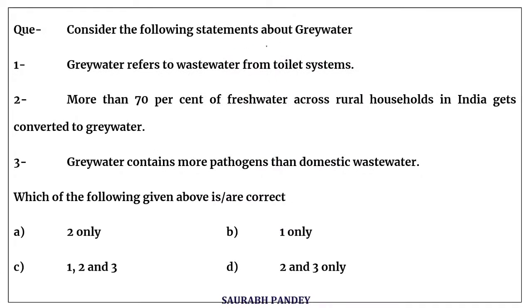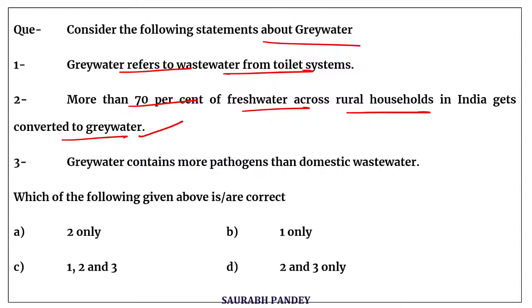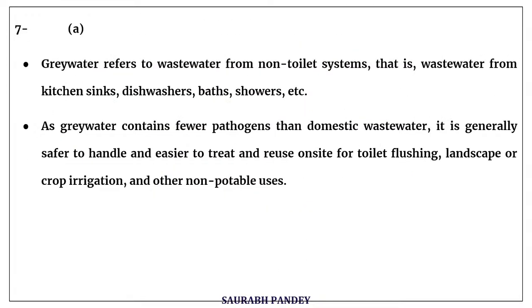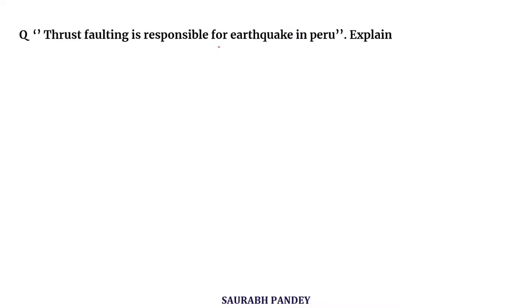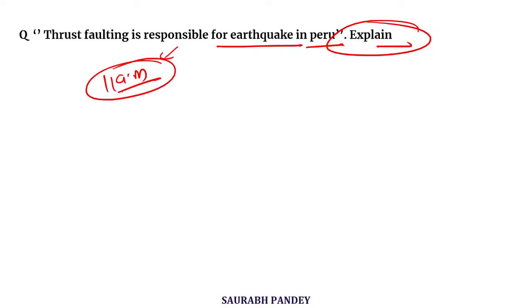Today's question: 'Consider the following statements about gray water.' Answer: only option two is correct. Gray water refers to wastewater from non-toilet systems — kitchen sinks, etc. Gray water contains fewer pathogens than domestic wastewater. Today's mains question: 'Thrust faulting is responsible for earthquakes in Peru — explain.' Press the like button, post your answer in the group at 11 o'clock for answer rating. Use code SPLIV. PDF link is in the description. Thank you everyone, let's crack it!